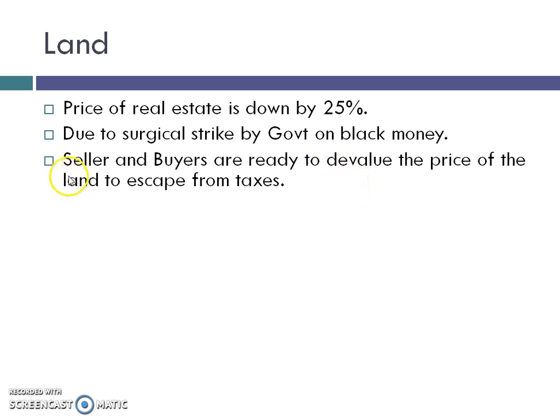What happens is that sellers and buyers in India — this has been going on for a long time — the official price is kept very low while the market price is much higher. For example, one shop whose market price is 10 lakh rupees, but officially in the registration documents it is shown that you purchased it for 2 lakh rupees. The remaining money is black money.